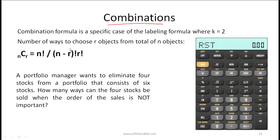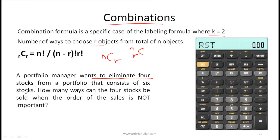The combination formula is a special case of the labeling formula where k = 2. Combinations give the number of ways to choose r objects from n objects where order does not matter, written as nCr. For example, a portfolio manager wants to eliminate 4 stocks from a portfolio of 6 stocks (A, B, C, D, E, F), and the order of selection doesn't matter.